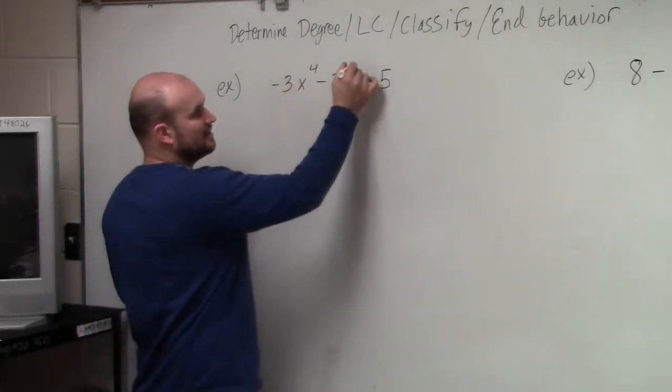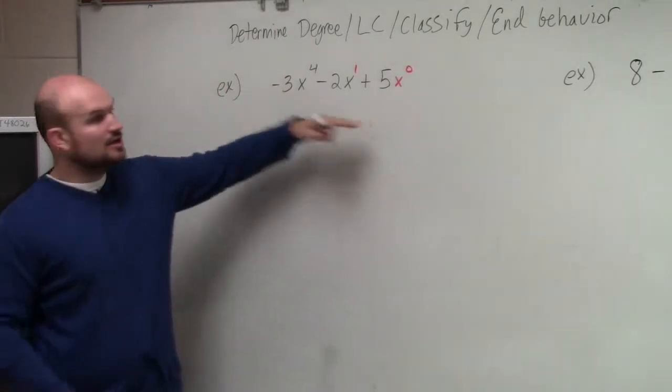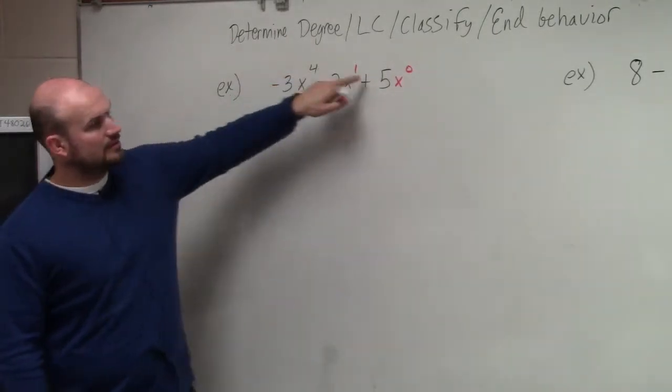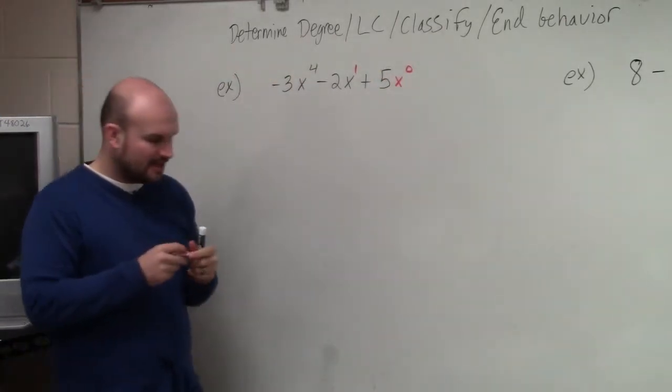Well, we have 4 in front, and then we have 1, and then we have x to the 0, because that's a constant. So is this already in descending order? Yes. So guess what? We don't have to do any work for determining put in descending order.